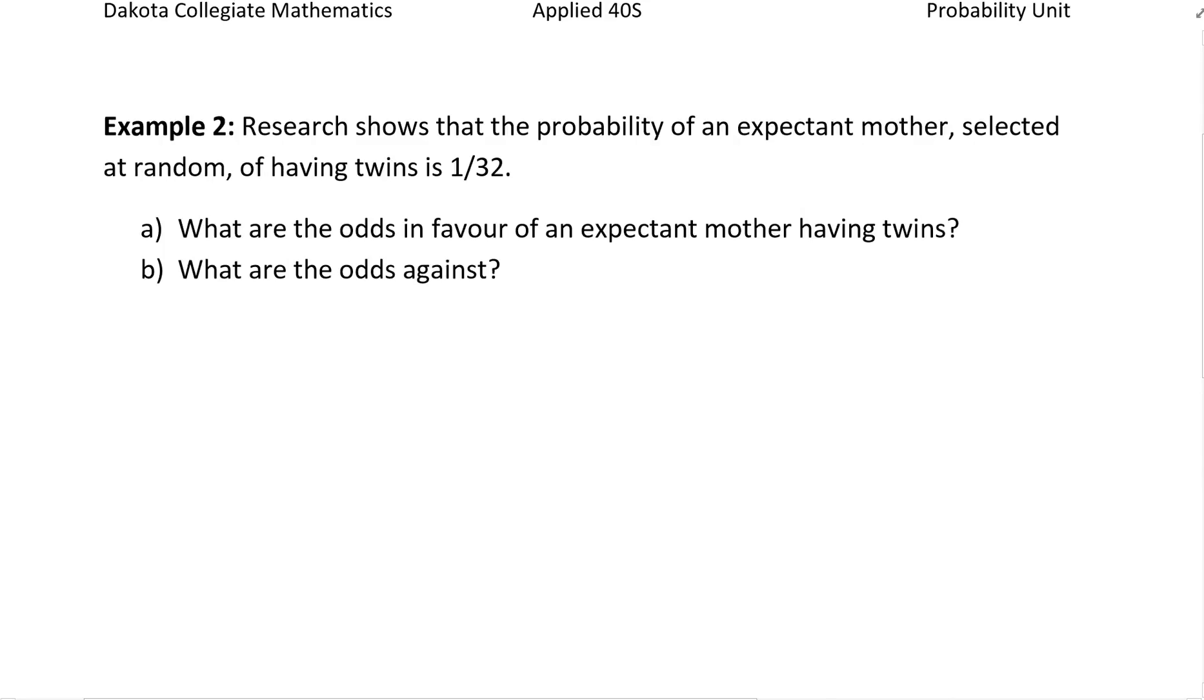Research shows that the probability of an expectant mother selected at random having twins is 1 out of 32. What are the odds in favor of an expectant mother having twins?